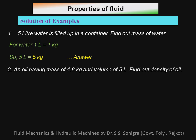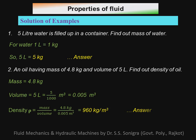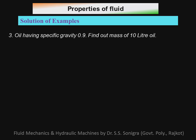Example number two: an oil has a mass of four point eight kilograms and a volume of five liters — find the density of the oil. Mass is four point eight kg; volume is five liters, converted to meter cubed by dividing by one thousand, giving zero point zero zero five meter cubed. Density equals mass divided by volume, so four point eight divided by zero point zero zero five equals nine hundred and sixty kilograms per meter cubed. That is the density of the given oil.